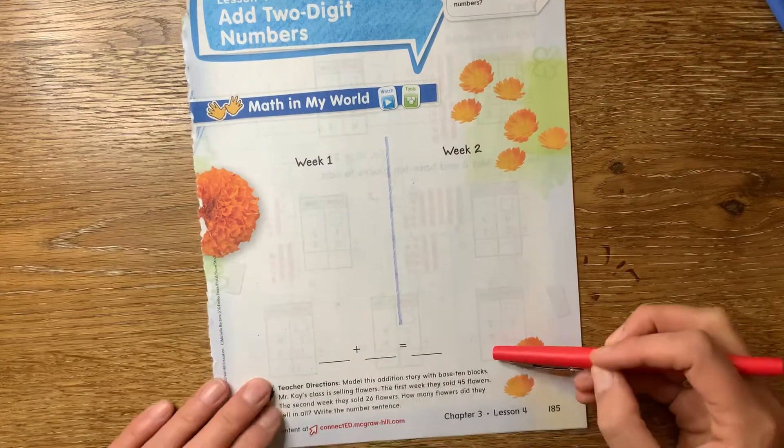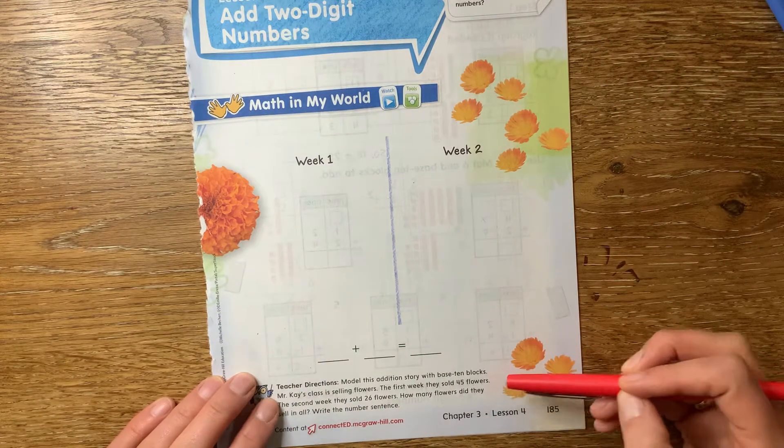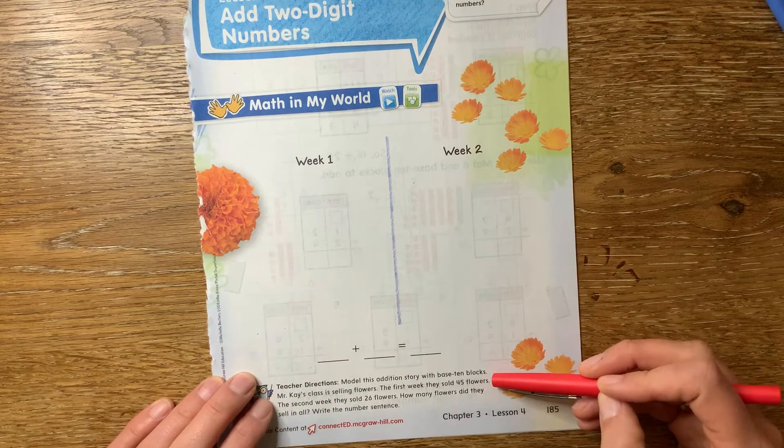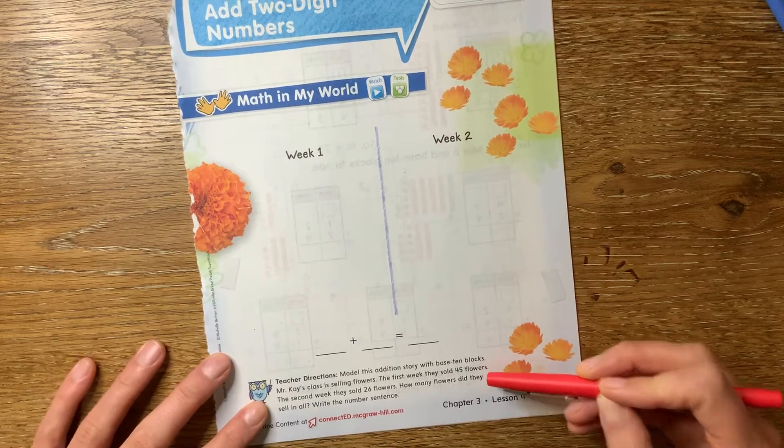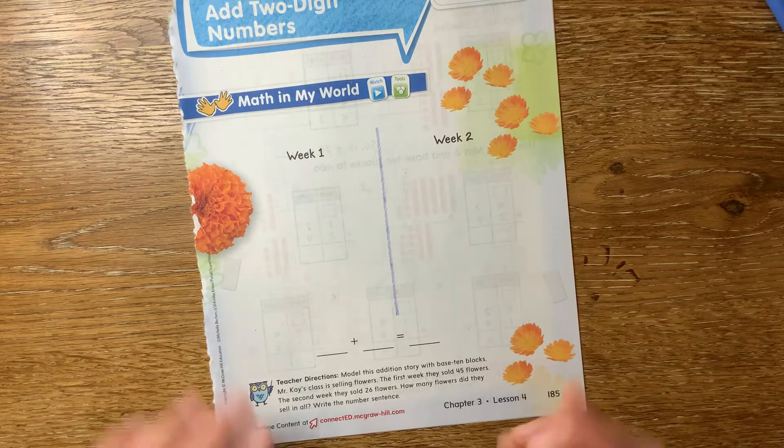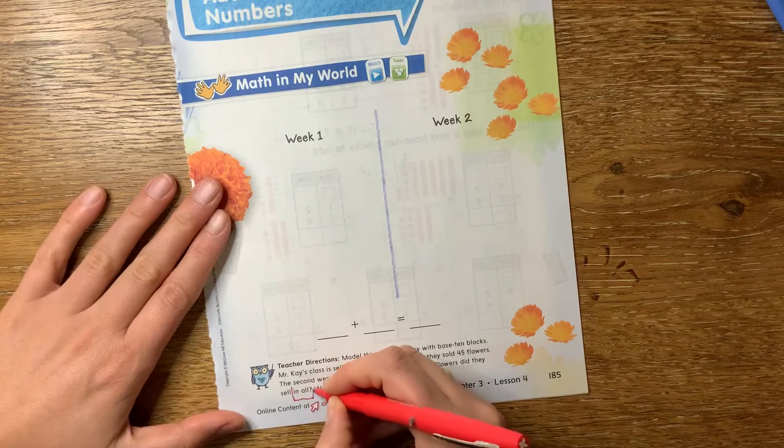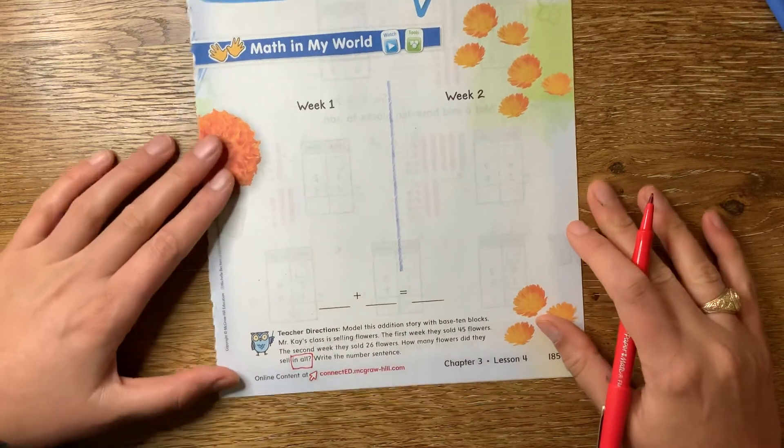So we are just going to do this example on the front together in the guided practice, and then you are going to do the independent practice by yourself. At the bottom it says Mr. K's class is selling flowers. The first week they sold 45 flowers. The second week they sold 26 flowers. How many flowers did they sell in all? Put a box around in all because that is a math action word.